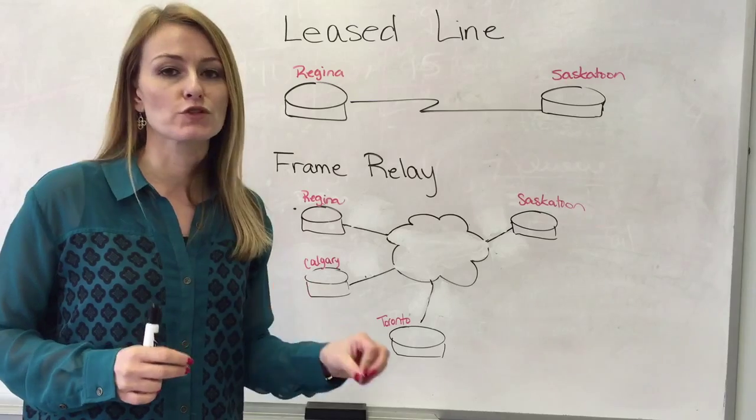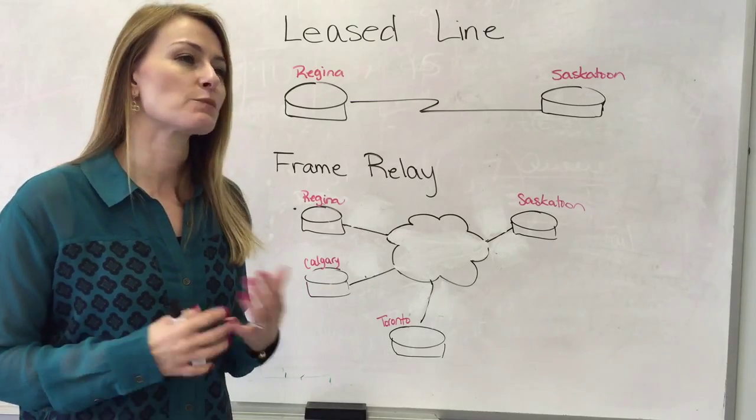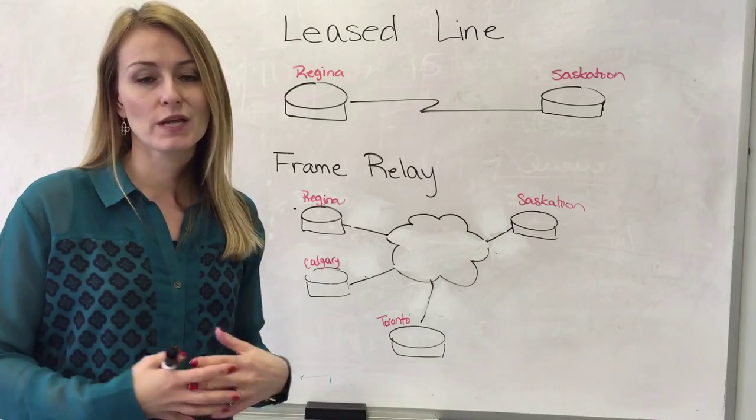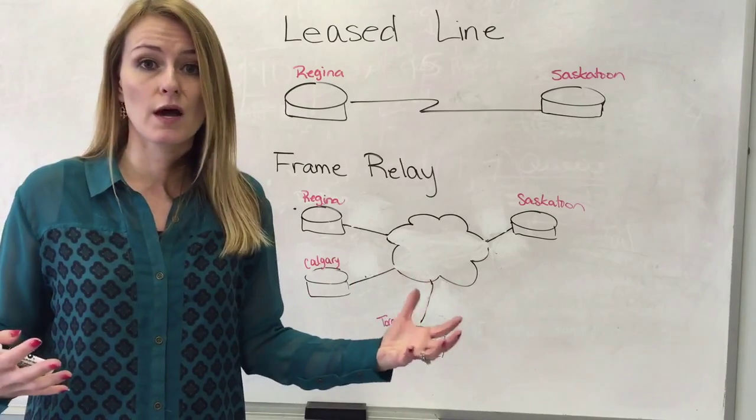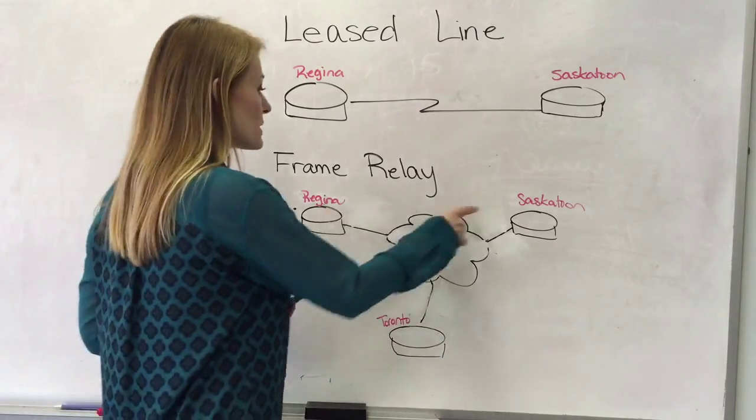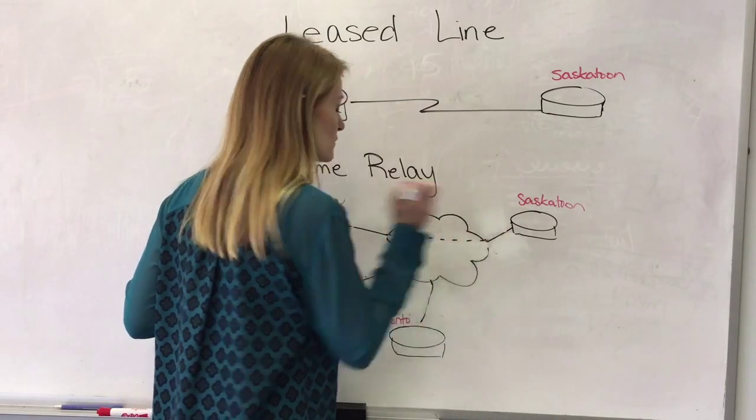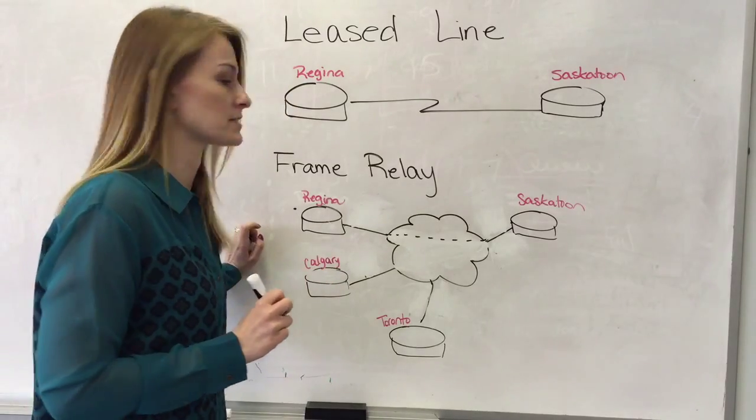Now a permanent virtual circuit or a PVC is a pre-configured connection established between more than one endpoints. So maybe Regina and Saskatoon need to communicate often. So from those two offices maybe you've got a PVC defined there.